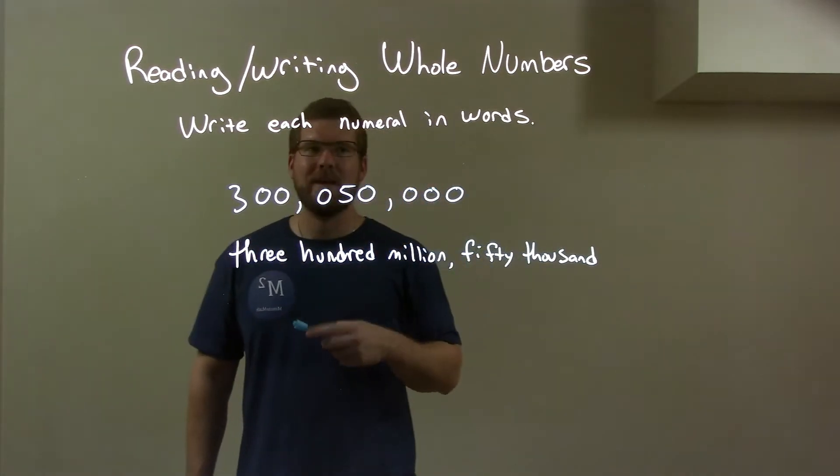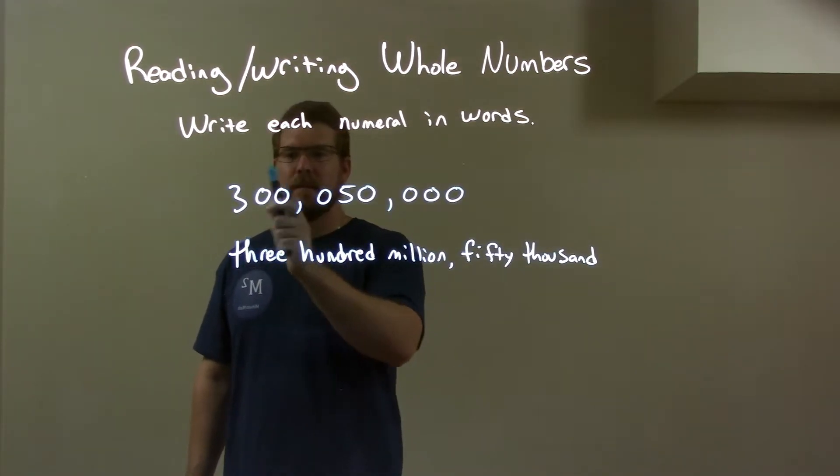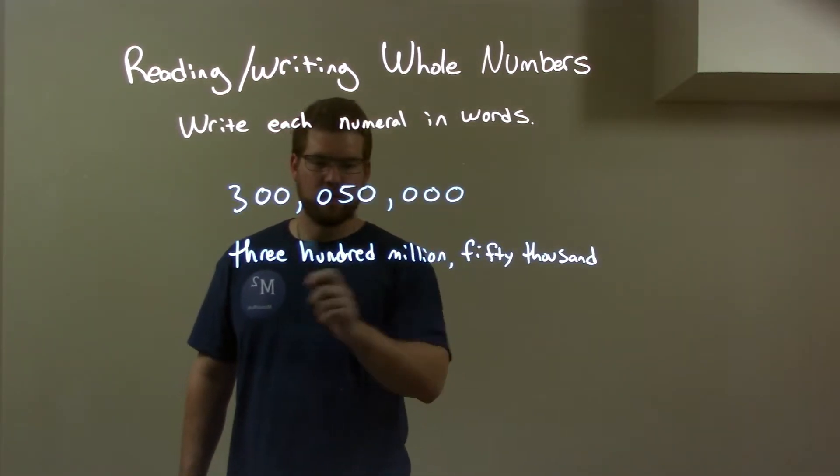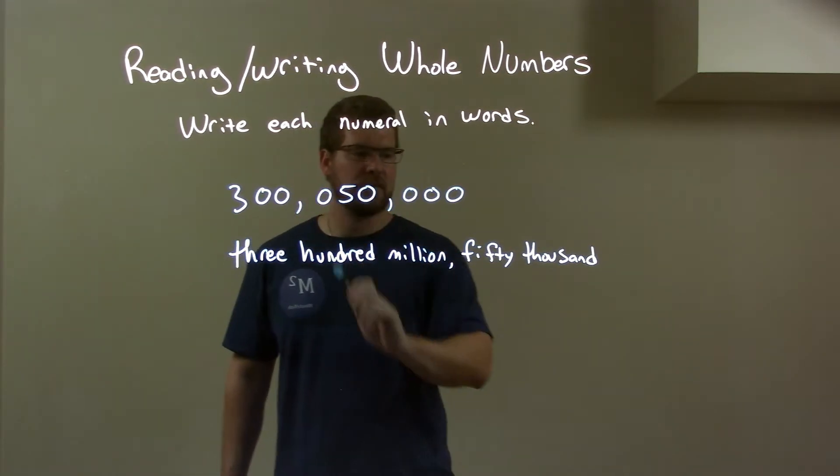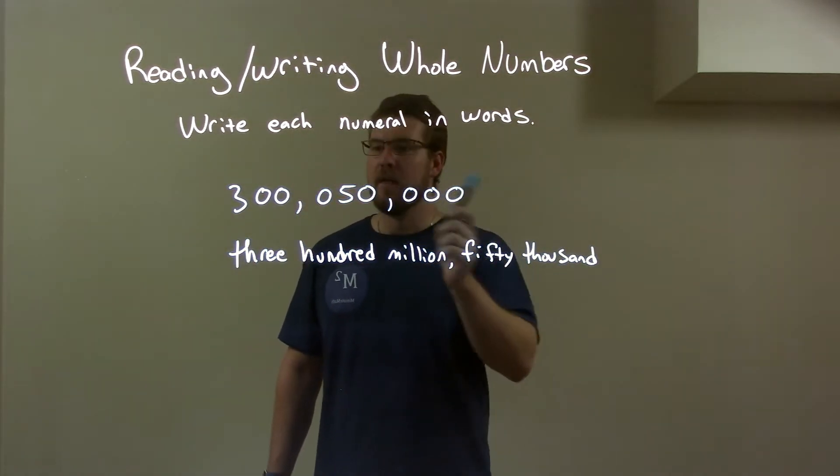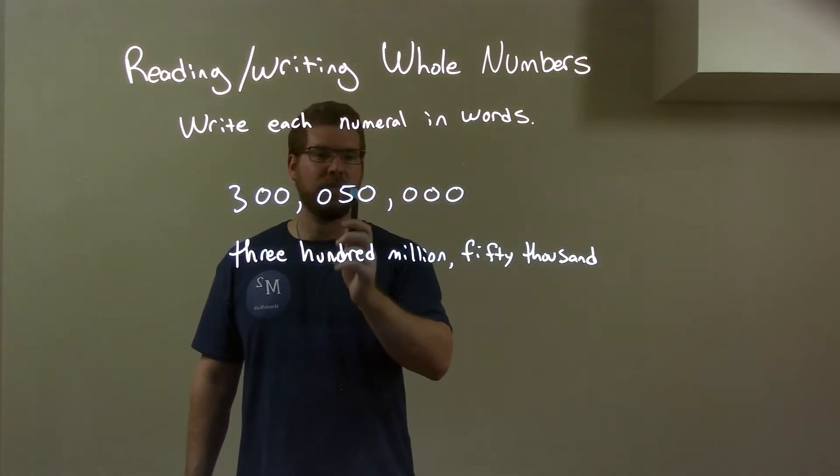Let me explain this again. We have 300 right here, and that's in the million section, so it's 300 million. Then we have 50 right here, and that's in the thousand section, so it's 50,000. There's nothing else. So again, our final answer is 300 million, 50,000.